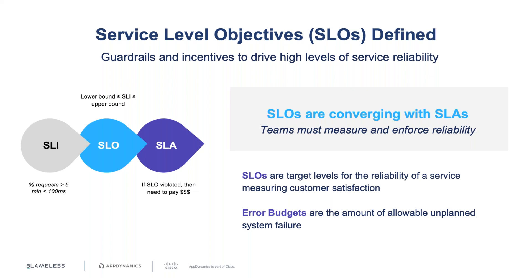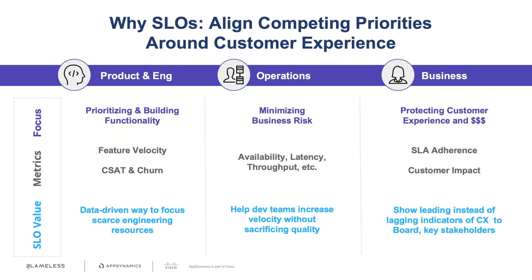Over the course of an SLO, you may see your error budget reduce, become completely exhausted, or continue to rise. Rolling windows are used to capture error budget — generally 30 days, sometimes 90 days. At Blameless, a 28-day interval is preferred as it's consistent with what engineers across multiple organizations deal with day to day.